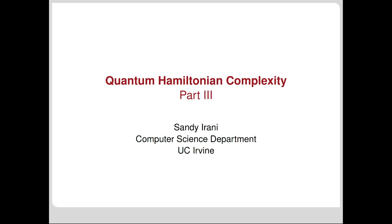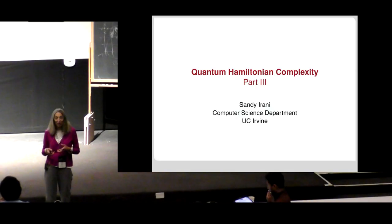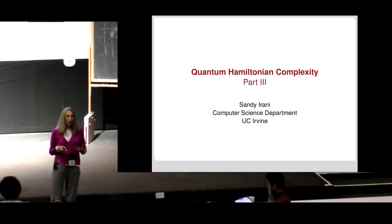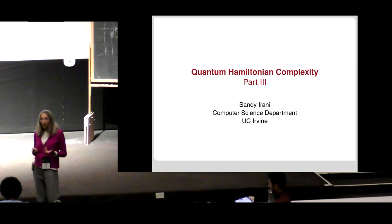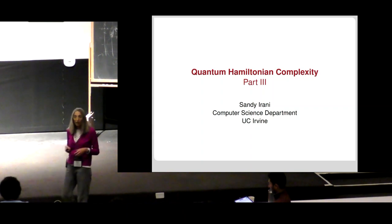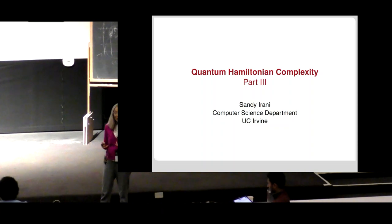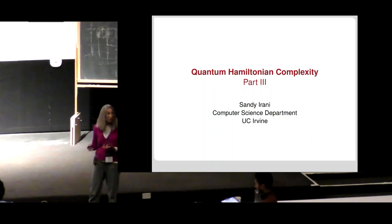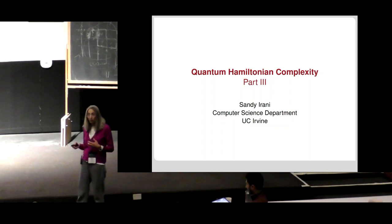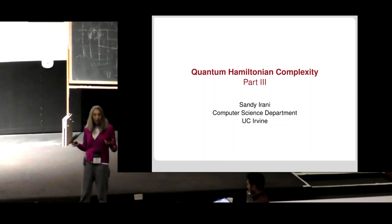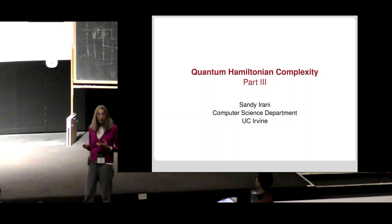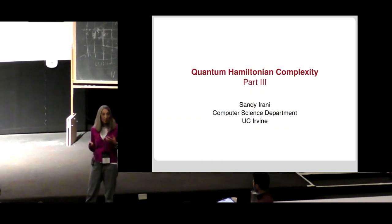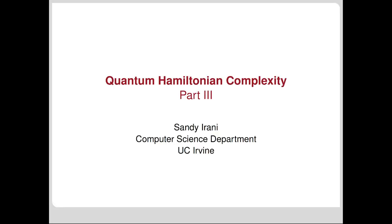In a physical setting, the local terms apply to particles that are close in proximity. So it naturally gives rise to the question: can we make this more physical? And if we do, does the problem become easier or does it remain hard? There were a series of follow-on works showing that the QMA hardness is quite robust—even under many different physical circumstances and assumptions, the hardness result still holds.